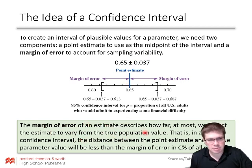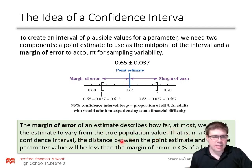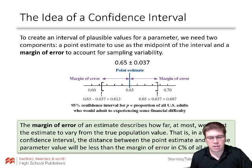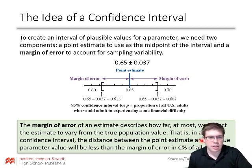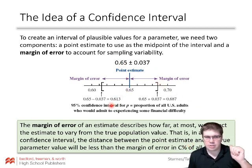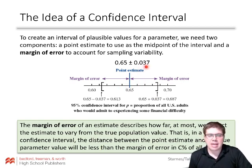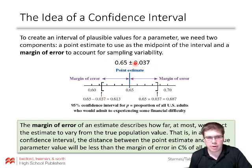The margin of error describes how far at most we expect the estimate to vary from the true population value. In a C% confidence interval, the distance between the point estimate and the true parameter value will be less than the margin of error in C% of all samples. For 95% confidence, we want to cover a distance that 95% of samples are within — going back to sampling distributions from last chapter, what range covers 95% of sample means or sample proportions? When we go back to our single statistic, we say we're pretty sure the parameter is within that range.